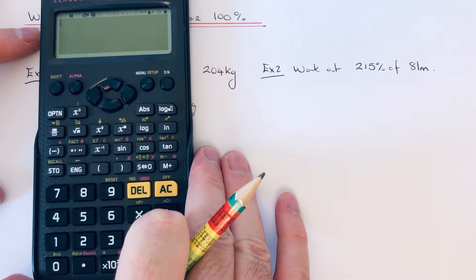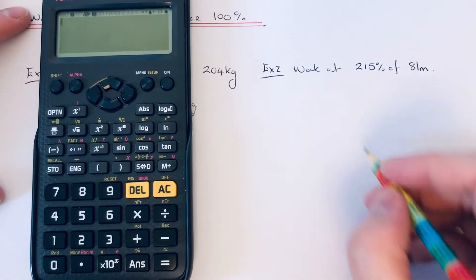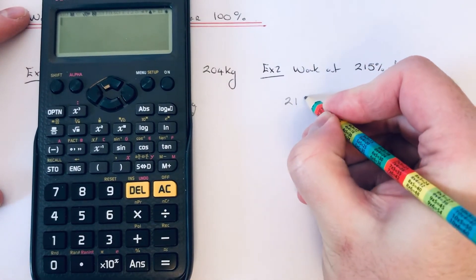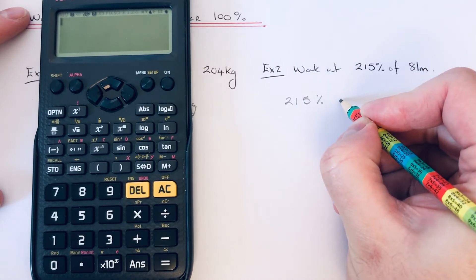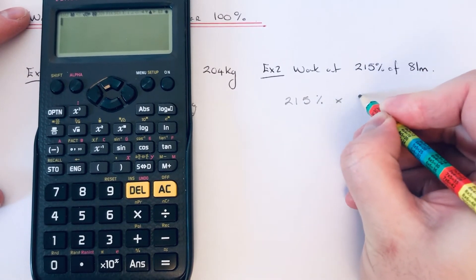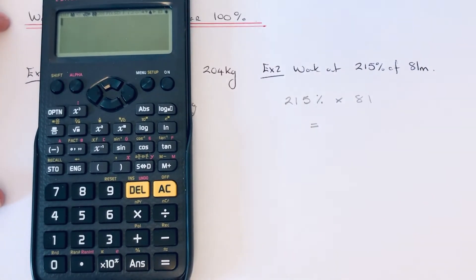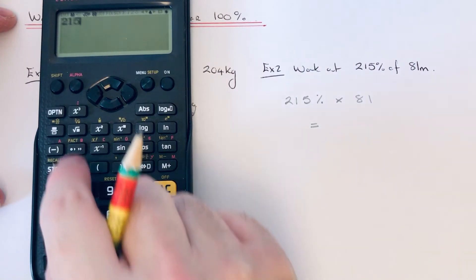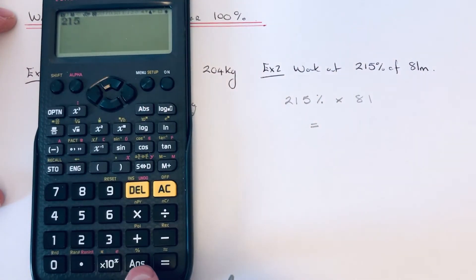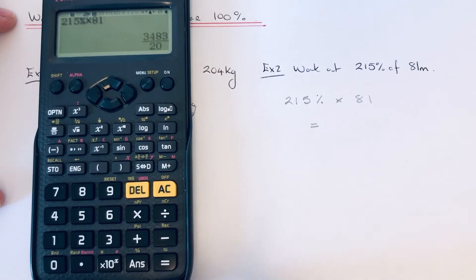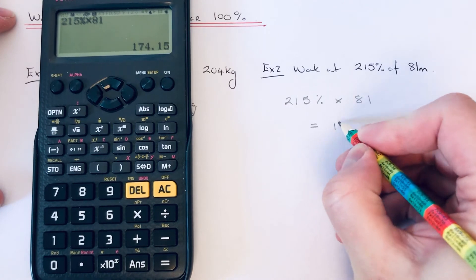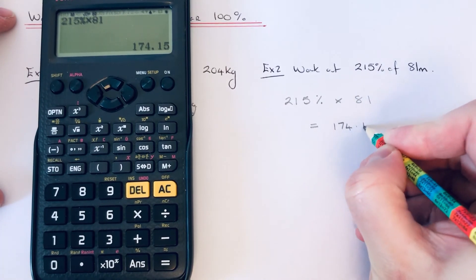This time we need to work out 215% of 81 meters. Again, I'm going to use the percentage key on the calculator — 'of' means times. So if we just type that in: 215, Shift, Ans, times 81, hit equals, and convert to decimal.